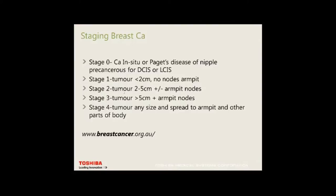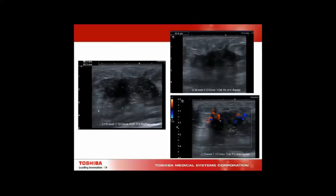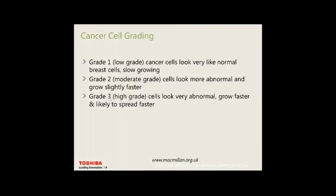Two to five centimetres with positive axillary nodes is stage 2; we want to see lesions at stage 1 or less. Here we have a 50 mm lesion bringing a patient into stage 3, with multiple nodes.